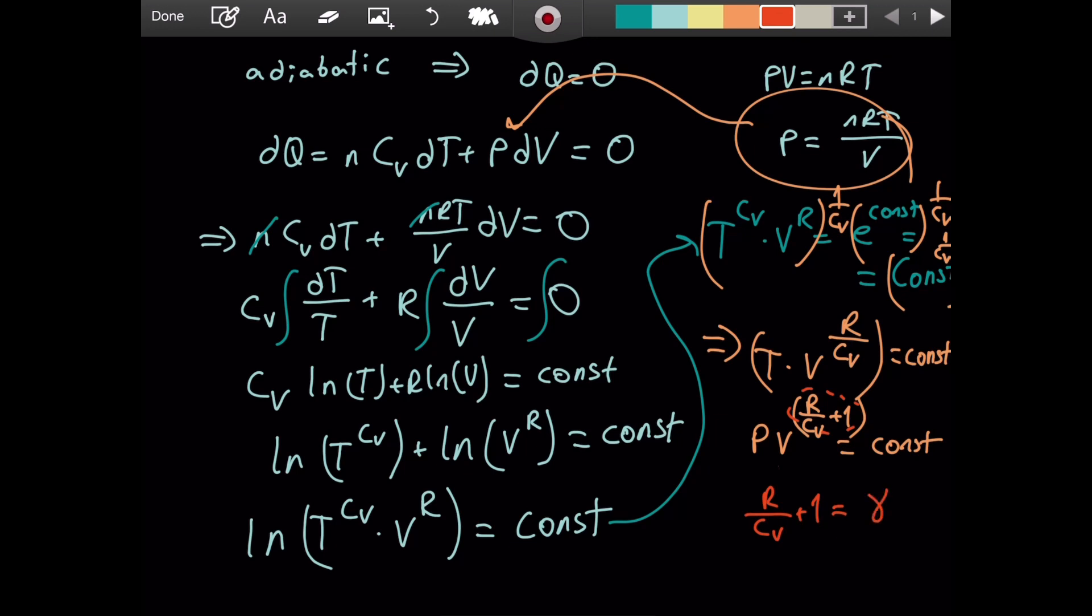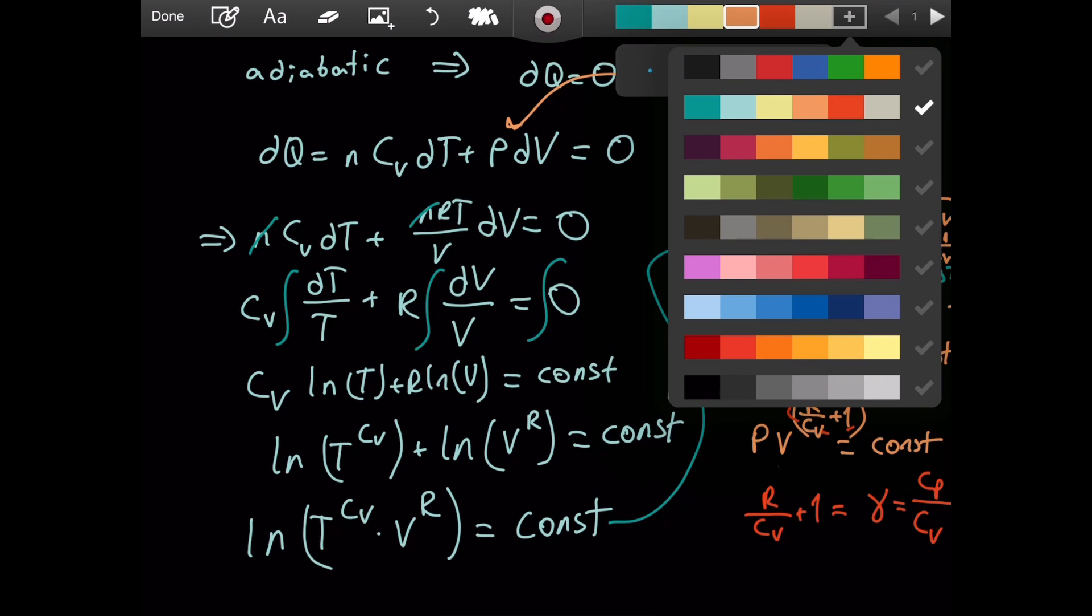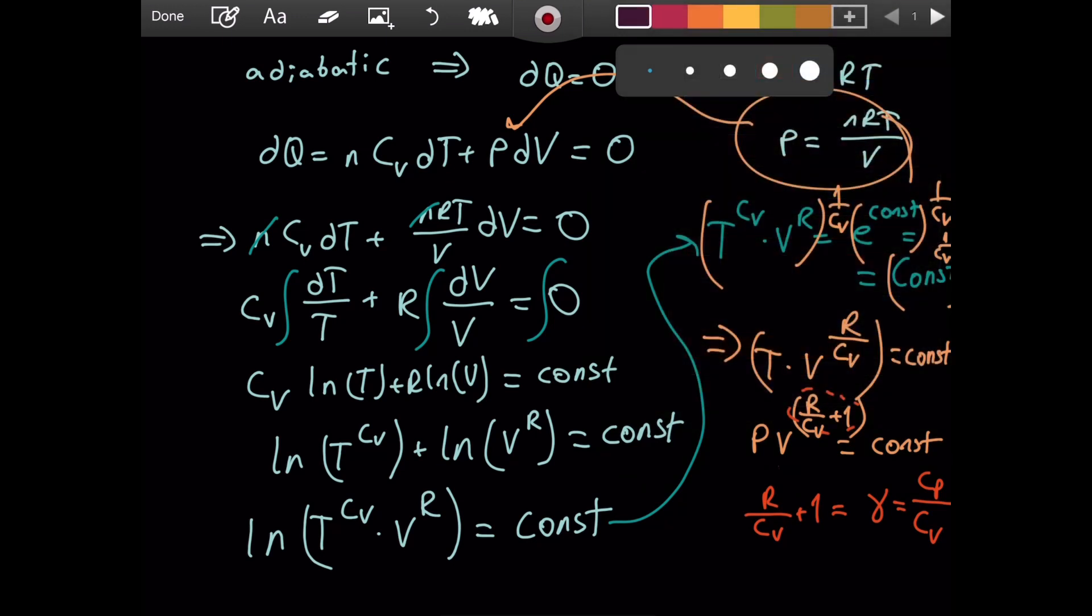We have a definition for this thing, R over Cv plus one. This is defined as gamma, and this is the adiabatic constant. You can see that this in fact equals Cp over Cv, because in the last video we showed that Cp is Cv plus R. So if you divide Cp by Cv, you get one plus R over Cv.